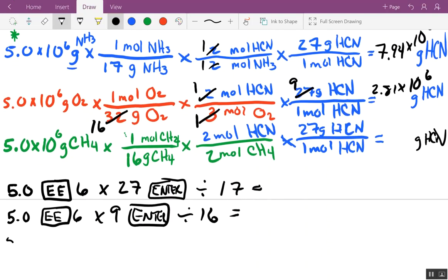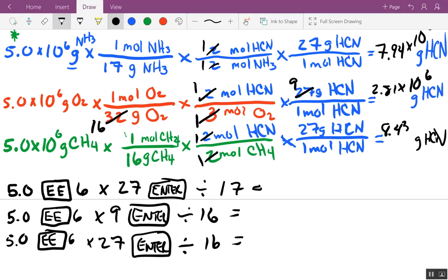And then finally, same thing. Let's see if we can simplify here. 1, 1, times 27 ENTER divided by 16. What do you get? 8.43 times 10 to the sixth. Which one is our limiting reactant? Oxygen now is our limiting reactant. This is how much this reaction will make of the hydrogen cyanide.